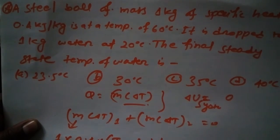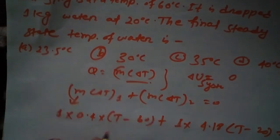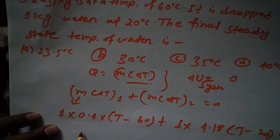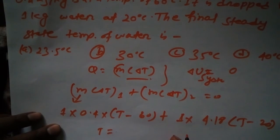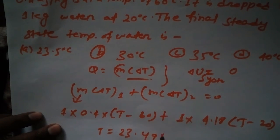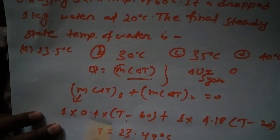So we have to calculate this one, and we are going to get after calculation, I did the calculation before this, the answer is 23.49 degree centigrade. So the approximate one is this one, so this is the answer.